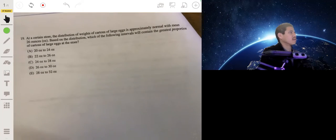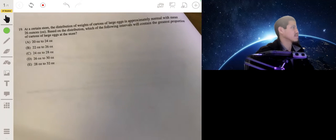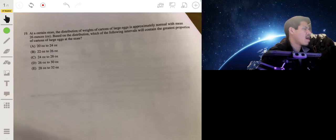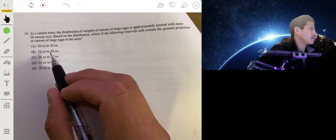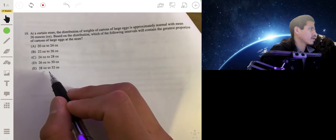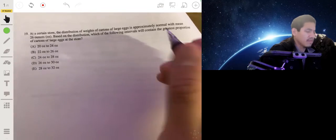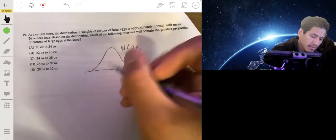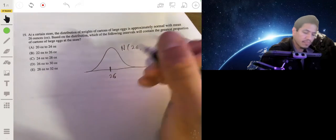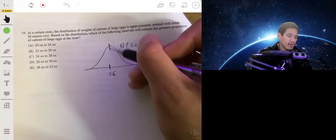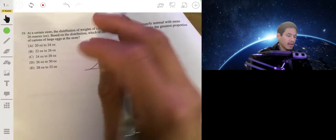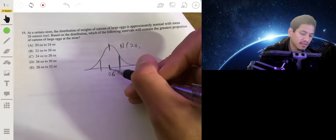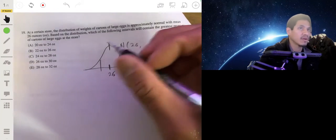Alright, for a certain large egg storage, the distribution of weights in parts is approximately normal with mean 26 ounces. Based on the distribution, which of the following intervals will contain the greatest proportion of parts of large eggs? So all of these look like they're four units. So we have a distribution that's approximately normal. The mean is 26, so the mean is right in the center. Okay, so since this is a normal curve, we know that if we have spreads of four all across, you're going to capture the most area if your spread of four is centered at 26, because that's how a bell curve works. That's how the normal distribution is shaped.